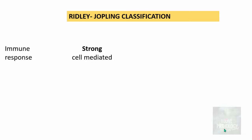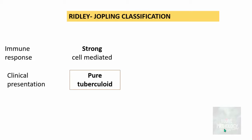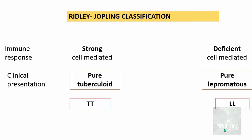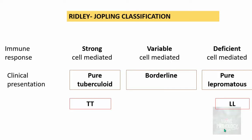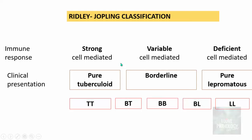If the immune response is a very strong cell-mediated response, the clinical presentation is that of pure tuberculoid leprosy — the TT type. If the cell-mediated immune response is deficient, it is referred to as pure lepromatous leprosy — the LL type. In between these two extremes is borderline leprosy, where the immune response is variable. Depending on whether it is closer to tuberculoid or lepromatous, it is subcategorized into borderline tuberculoid (BT) and borderline lepromatous (BL), with the rest categorized as BB type.